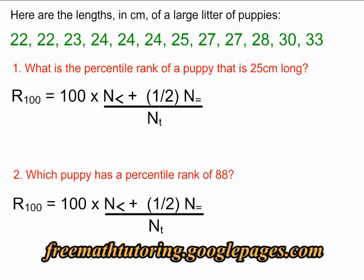The percentile formula is used to find the percentile rank of a data point in a group of data. In this example, we have the lengths in centimeters of 12 puppies.